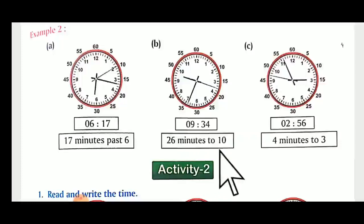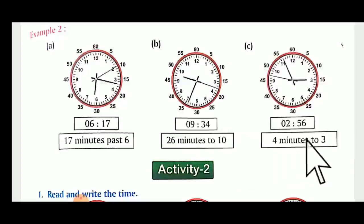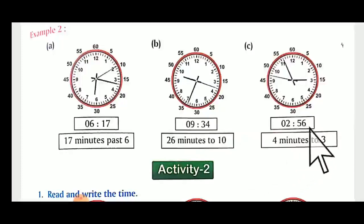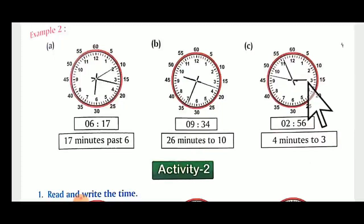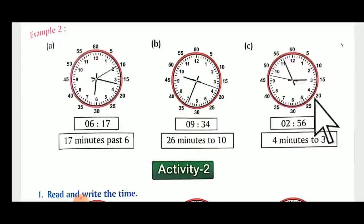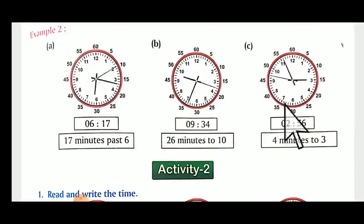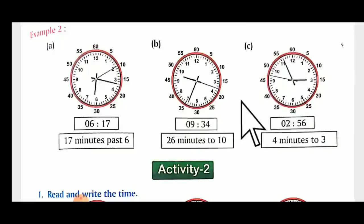We also have two hours and fifty-six minutes — two o'clock has been completed and it is about to be three o'clock. So how many minutes are remaining? Four minutes to three. If it is before six it will be past; if it is after six, we write minutes to — meaning so many minutes are remaining to be that hour.